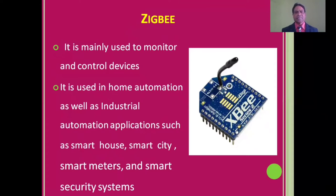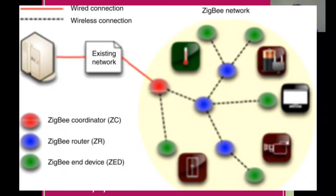Zigbee is mainly used to monitor and control devices. In the network, a Zigbee device can act as a coordinator, sometimes as a router, and sometimes as an end node.